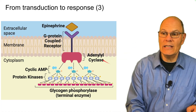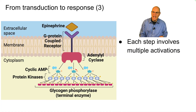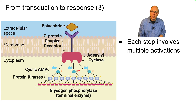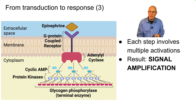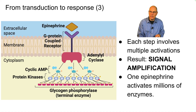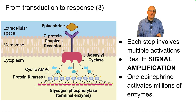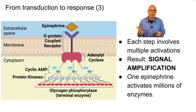Once we get to adenylyl cyclase, each step involves multiple activations. Adenylyl cyclase will activate many cyclic AMPs, and each of these cyclic AMPs will start different phosphorylation chains. The result is signal amplification. We had one epinephrine enter the system, but by the end you'll have the activation of millions of enzymes to bring about a massive cellular response.